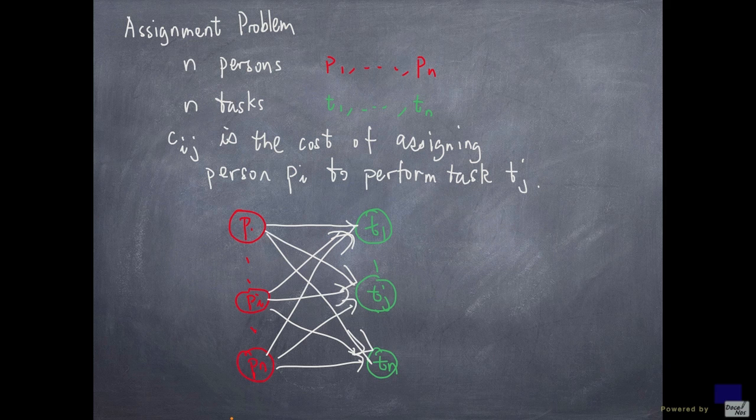To formulate this as an uncapacitated network flow problem, I need values at the nodes, indicating surpluses and demands. And I'm going to put minus 1 on the tasks, and plus 1 on the persons.